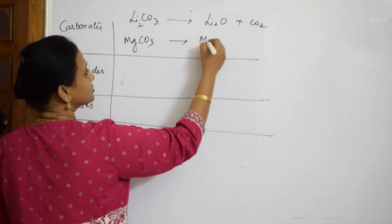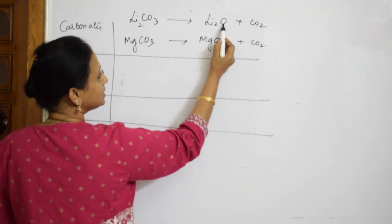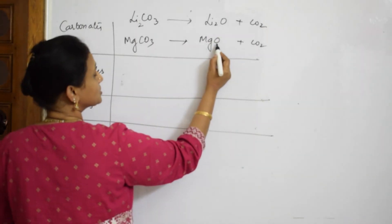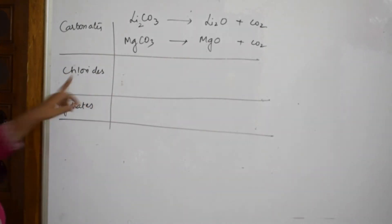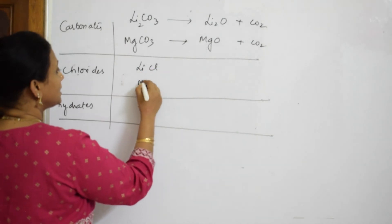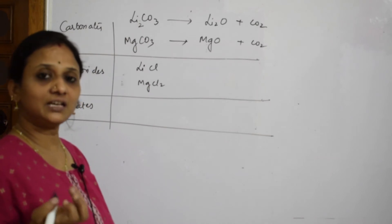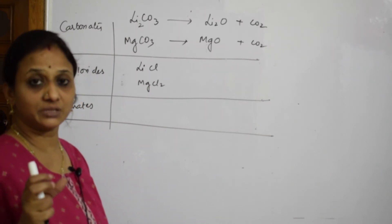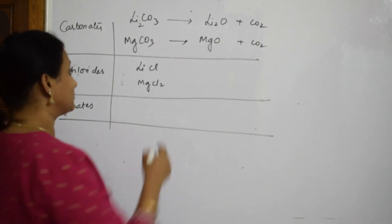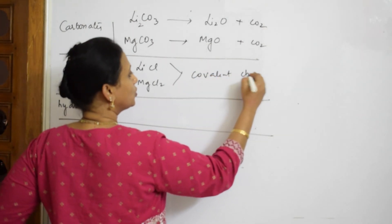Regarding chlorides: lithium chloride and magnesium chloride both have covalent character — not ionic character. Because of this covalent character, both LiCl and MgCl₂ are soluble in ethanol, and you would use ethanol as the solvent in the lab.